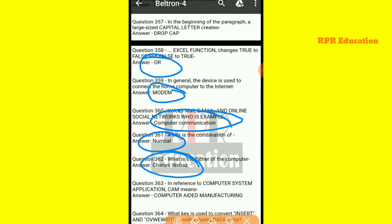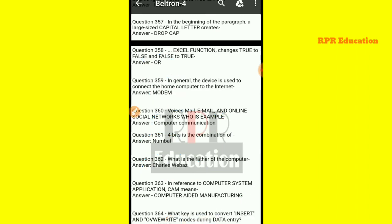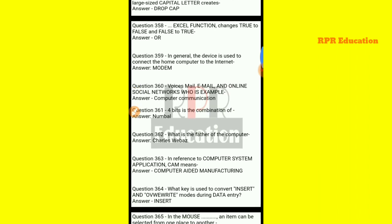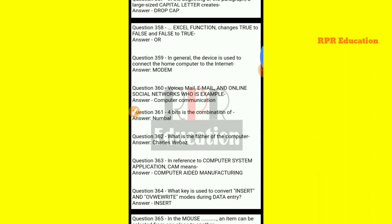And next one: in reference to computer system applications, CAM means what? CAM full form is Computer-Aided Manufacturing. And it's a very important question.